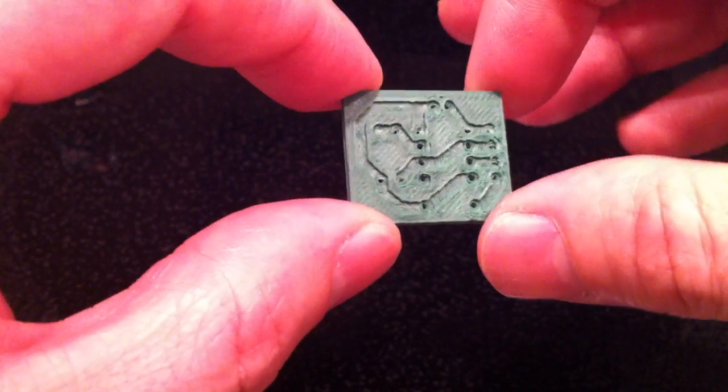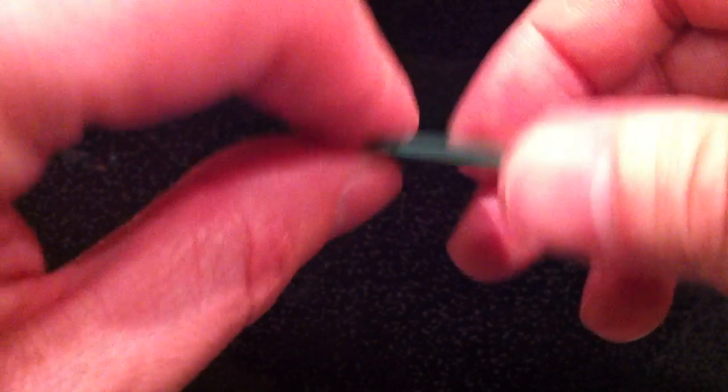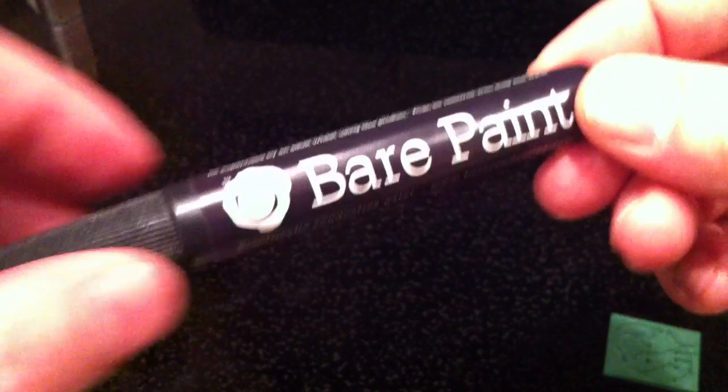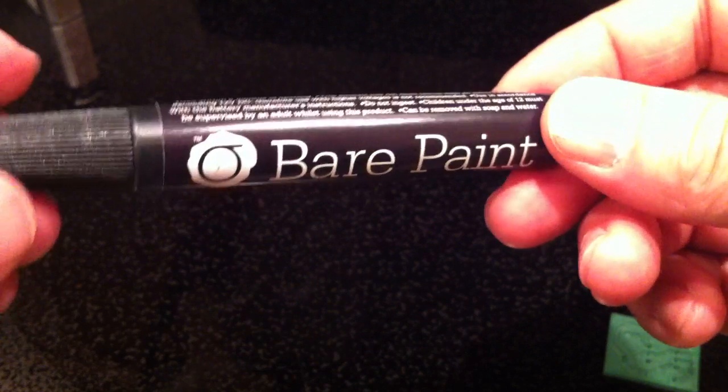started with pin through hole components because that would be more difficult than the surface mount components. The conductive paint we're going to be using is this Bare Paint conductive paint that I found at Radio Shack.